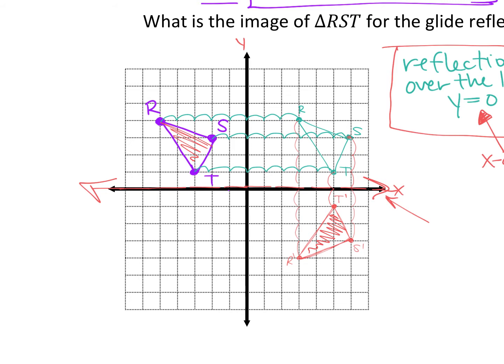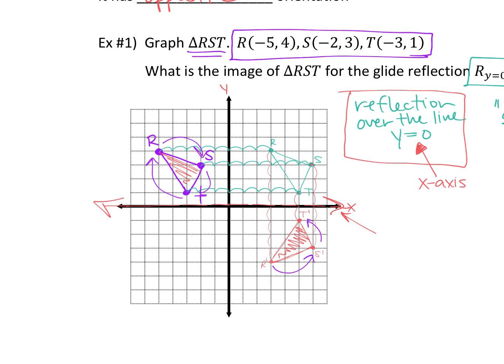Real quick, same orientation versus opposite orientation. If you think about this, RST is, if we're naming it RST, we're going clockwise. So what should R prime, S prime, T prime be? Counterclockwise. So just check that. R prime, S prime, T prime is moving counterclockwise. So we know we flipped, which is a good sign. That will always have opposite orientation. Questions on that? I want you to try the next one then.